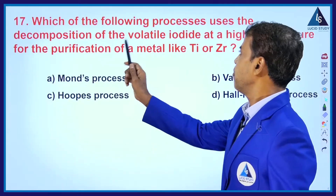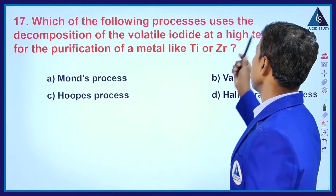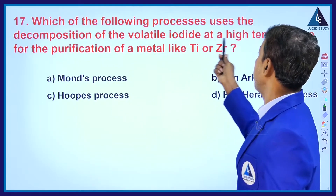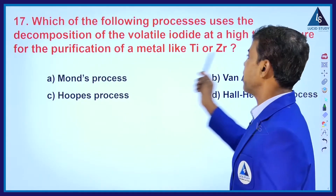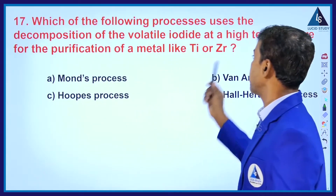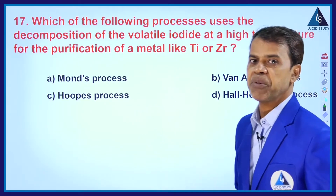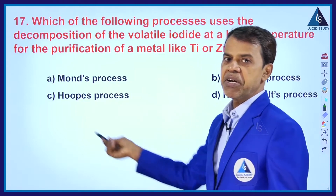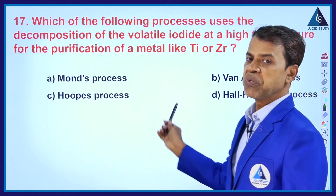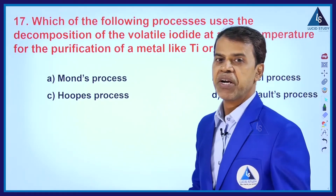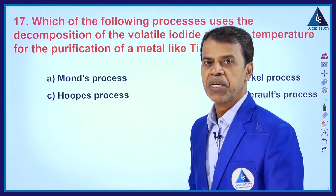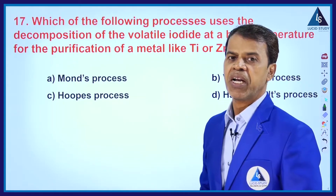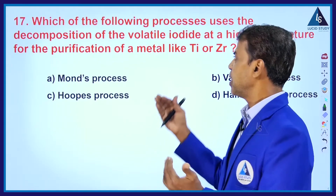The next question is: which of the following processes uses the decomposition of volatile iodide at high temperature for purification of a metal like titanium or zirconium? Which purification method is used in the purification of titanium and zirconium by the decomposition of their volatile iodides?